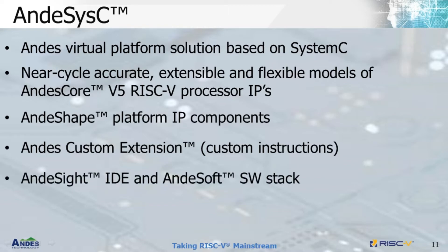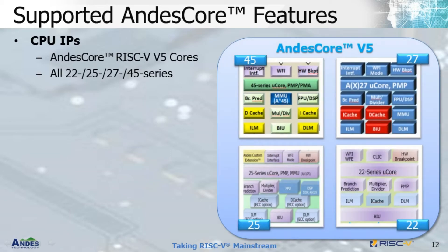ND6C can work directly with our feature-rich NDSign IDE and NDSign software stack for users to jumpstart and easily speed up the whole software development cycle, with early profiling and high-level estimation of performance from the expected hardware design. Our ND6C supports all our NDIS Core RISC-V V5 IPs, from entry-level N22, mid-range 25 series, advanced 27 series, to high-performance superscalar 47 series.